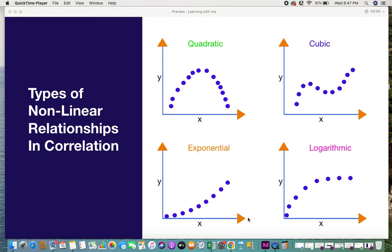In this video I will be giving you some information on the types of nonlinear relationships and correlation. Before this I have taken a video on what is correlation, correlation coefficient and the different types of correlations. You can click on the link given in the description box. This is just a very short video with a little bit of information on the different types of nonlinear relationships.